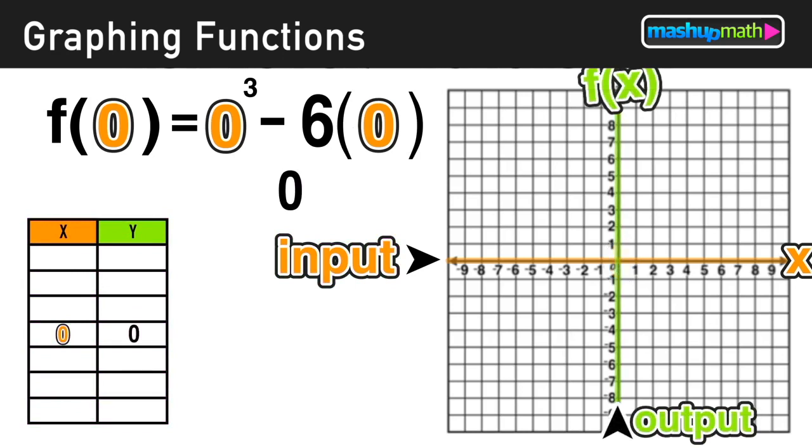That point is (0, 0). So again, you input 0, you output 0, and we know that this function is going to pass through the origin.